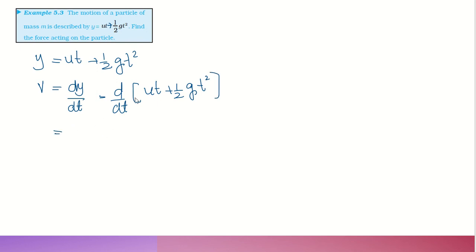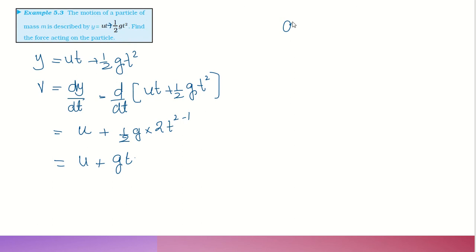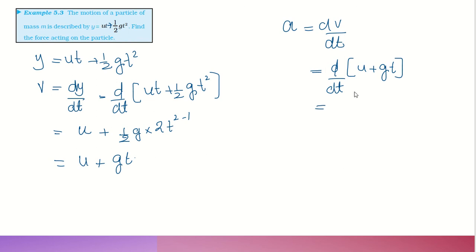Taking the derivative of y = ut + ½gt² with respect to time: V = d/dt(ut + ½gt²). Since u is constant, d/dt of ut is u. For ½g × d/dt(t²) = ½g × 2t = gt. So V = u + gt. Then acceleration = dv/dt = d/dt(u + gt). The derivative of u (constant) is 0, and d/dt(gt) = g. Therefore acceleration = g.